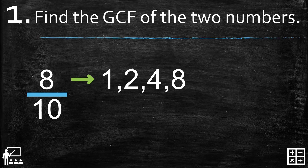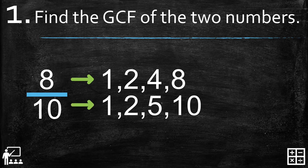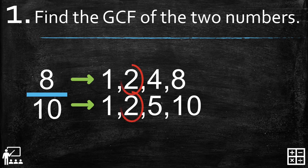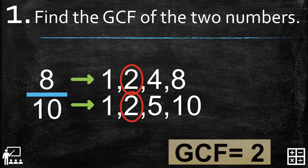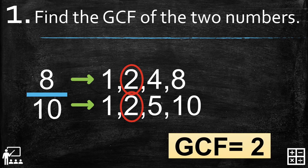The factors of 10 are 1, 2, 5, and 10. I'm using the listing method to find the GCF. The GCF of 8 and 10 is 2.